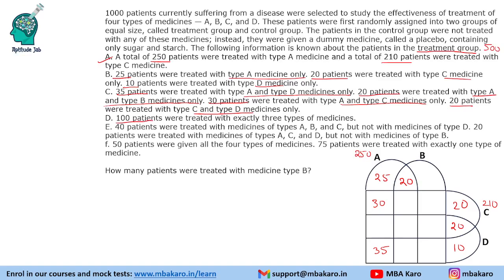100 patients were treated with exactly 3 types of medicine. The regions representing 3-medicine combinations are: A, C and D; A, B and D; and a fourth region. We are told the total of patients treated with exactly 3 types of medicine is 100. The next statement says 40 patients were treated with A, B and C but not D.